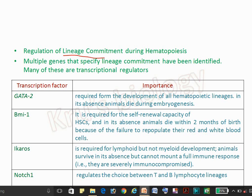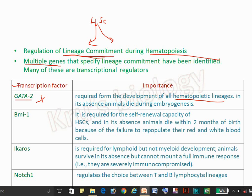The regulation of lineage commitment during hematopoiesis — meaning that during hematopoiesis, cells differentiate into a specific lineage, either myeloid or lymphoid — is controlled by several transcription factors. The first is GATA, which is important in the development of the hematopoietic lineage; animals cannot survive without this transcription factor. The second is BMI-1, which is responsible for the self-renewal capacity of hematopoietic stem cells.